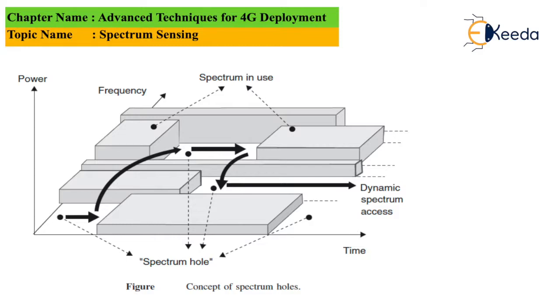Here we can see that there are broad frequency bands being allocated. In between, the medium or smaller frequency bands that you see are nothing but the guard channels that are being used to separate the frequencies.